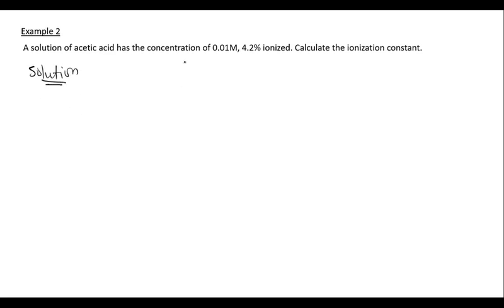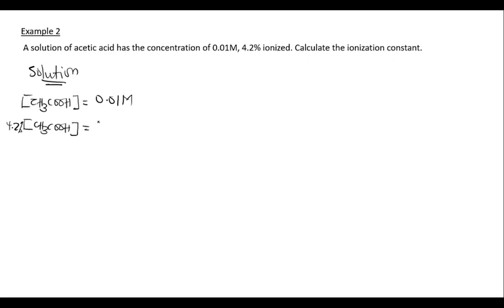The concentration of acetic acid CH₃COOH is 0.01 molar. Since 4.2 percent of it ionized, we calculate: 4.2% of 0.01 = (4.2 / 100) × 0.01 = 4.2 × 10⁻⁴ molar — this is the amount that dissociated.